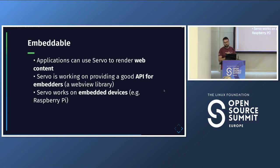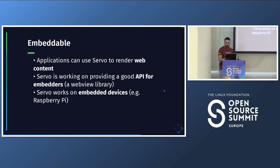Servo is embeddable in two senses. First, applications can use Servo to render web content — we're working on providing a good API for embedders, like a WebView library, so others can start using Servo easily. Second, Servo works on embedded devices — constrained, low-power devices like the Raspberry Pi. We're at the Linux Foundation Europe booth downstairs where we have a Raspberry Pi running Servo, and you can play with it.